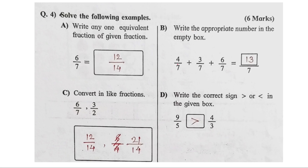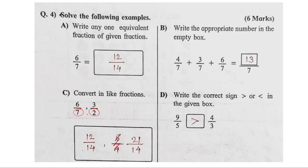Next, write the appropriate number into the empty box. These three numbers are the same — if the denominator is the same, then the number is the same. Convert to like fractions. Like fractions have the same denominator. The numerals are 7 multiplied by the numerator: 7 times 3 is 21 and 7 times 2 is 14. The two numbers are the same and equivalent — these are the like fractions.